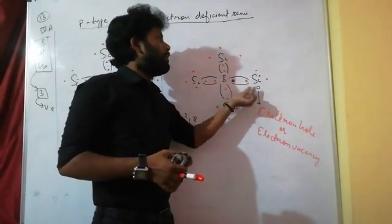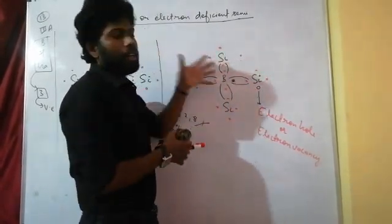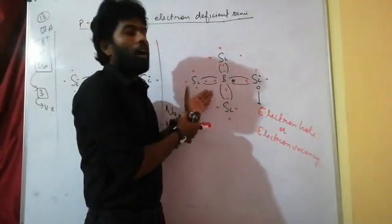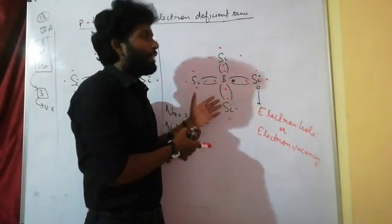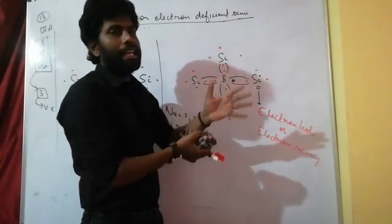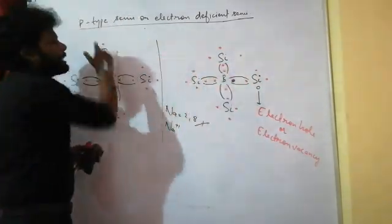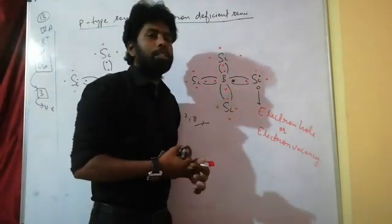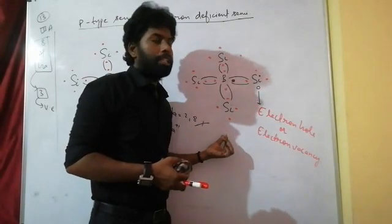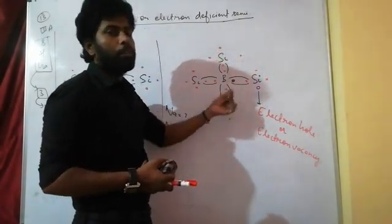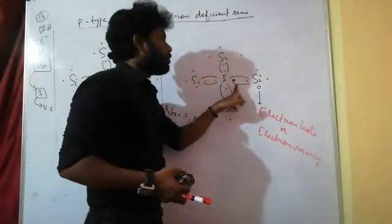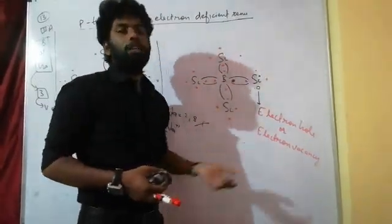That electron hole will behave as positive, or as a proton. Because of these electron holes, the conductivity of this kind of semiconductor increases. Therefore it is known as P-type — P means positive. This electron hole carries a positive charge because it behaves as a proton. This is why P stands for positive, and it is called P-type semiconductor, also called electron deficient semiconductor, because there are fewer electrons here.